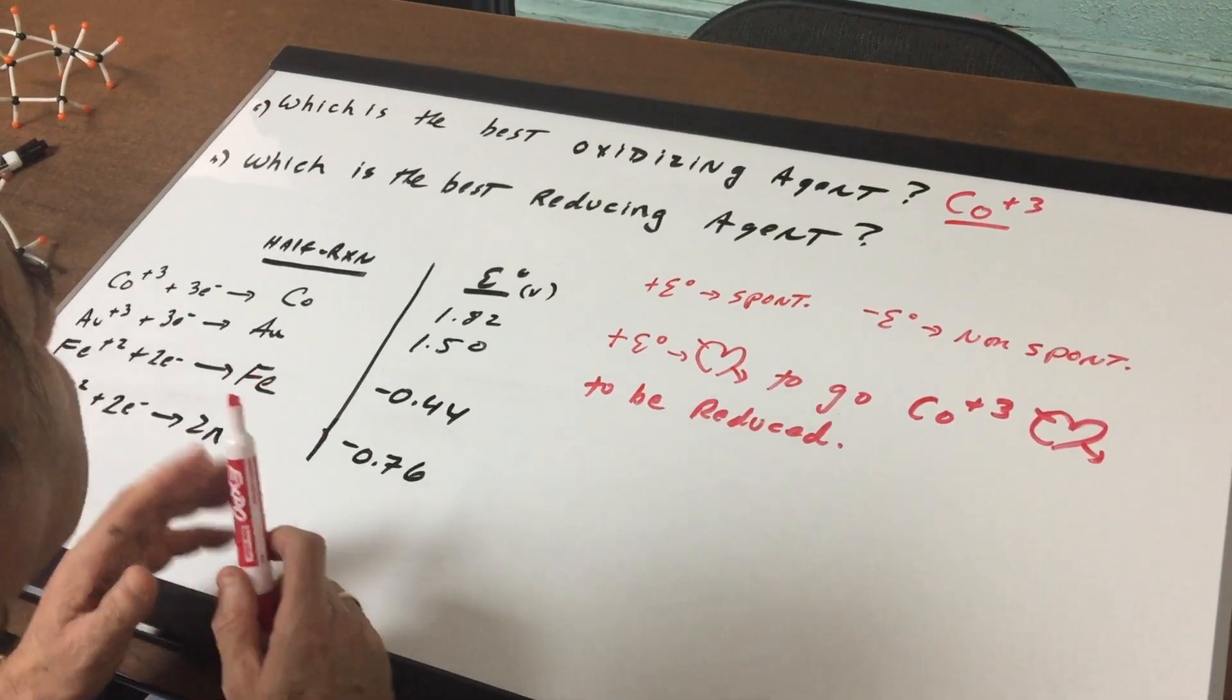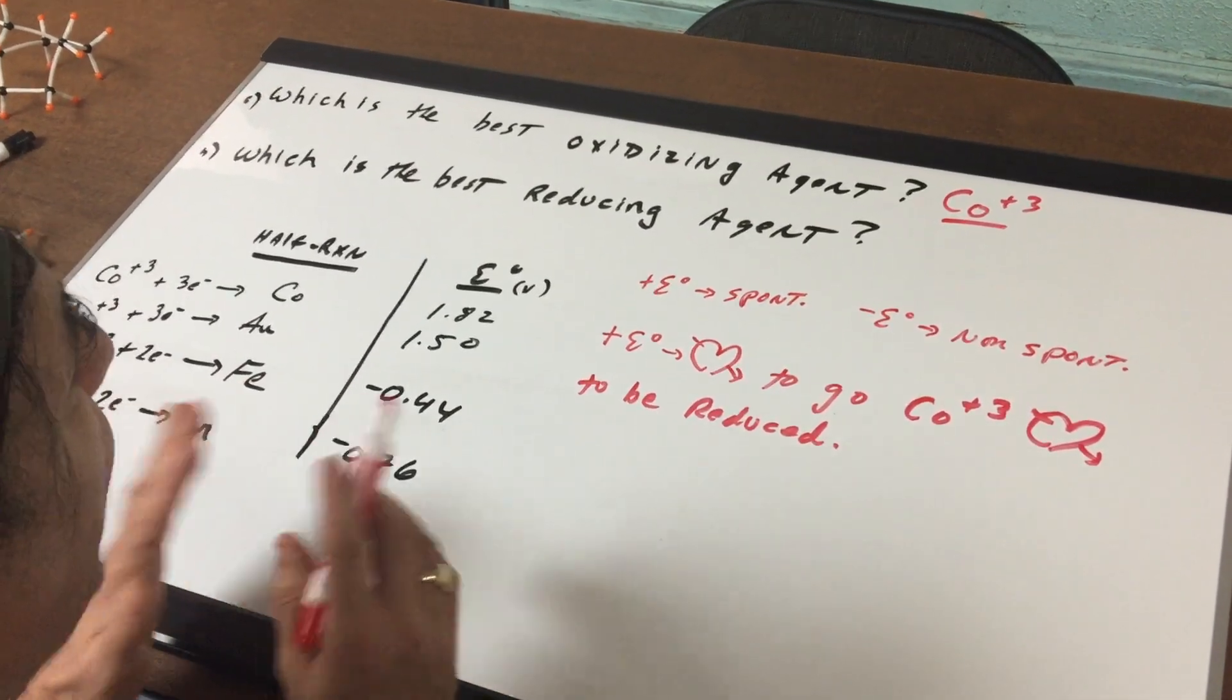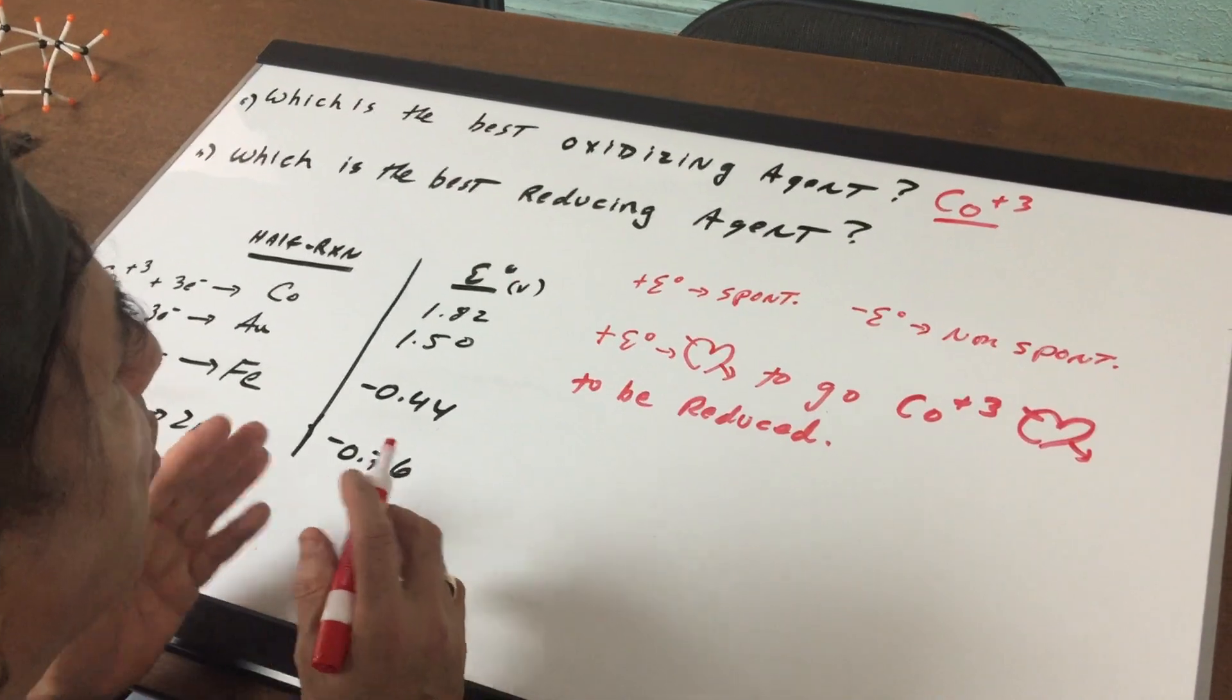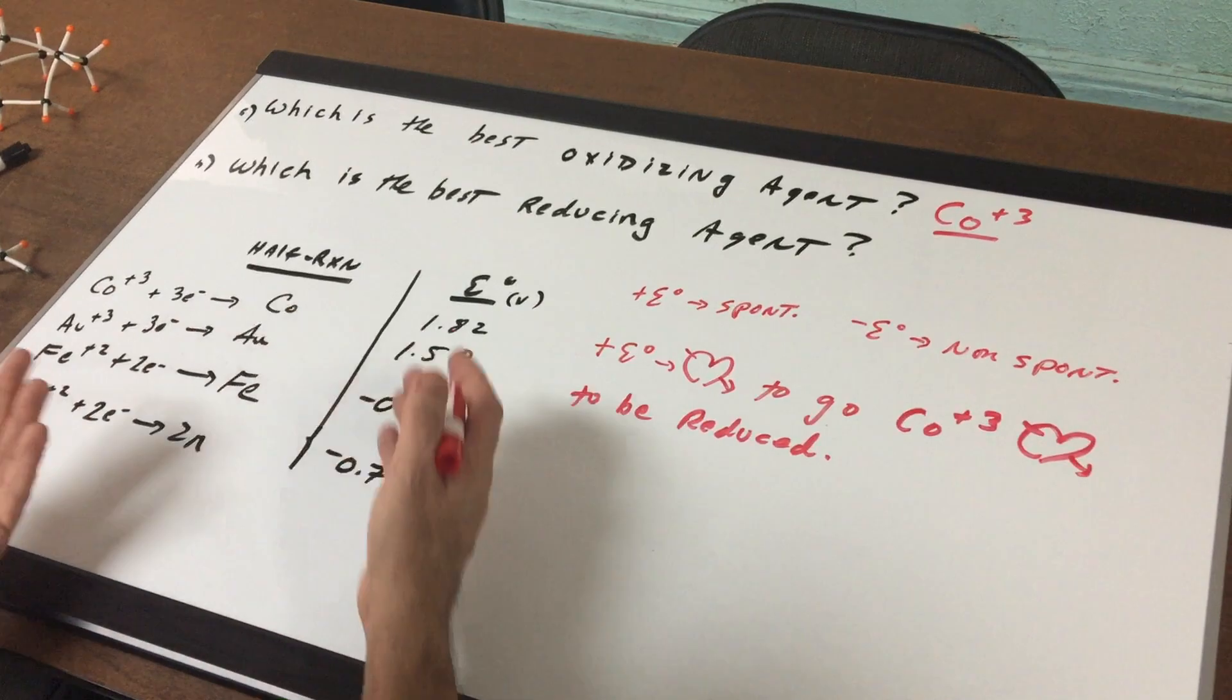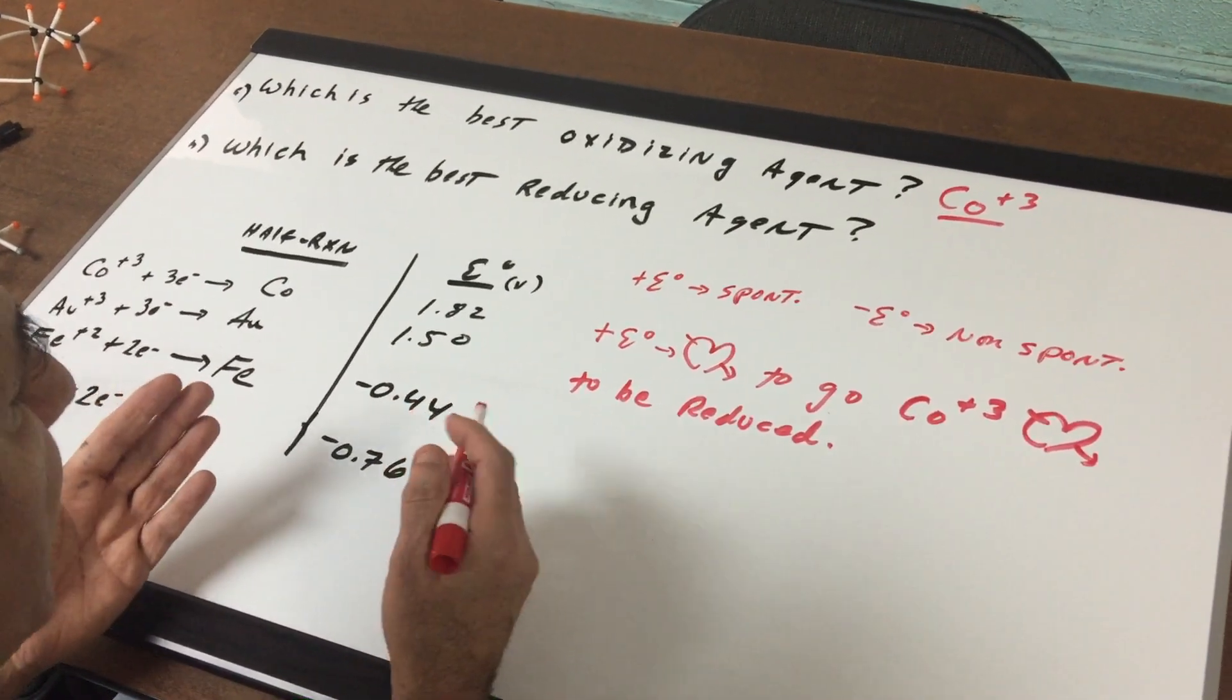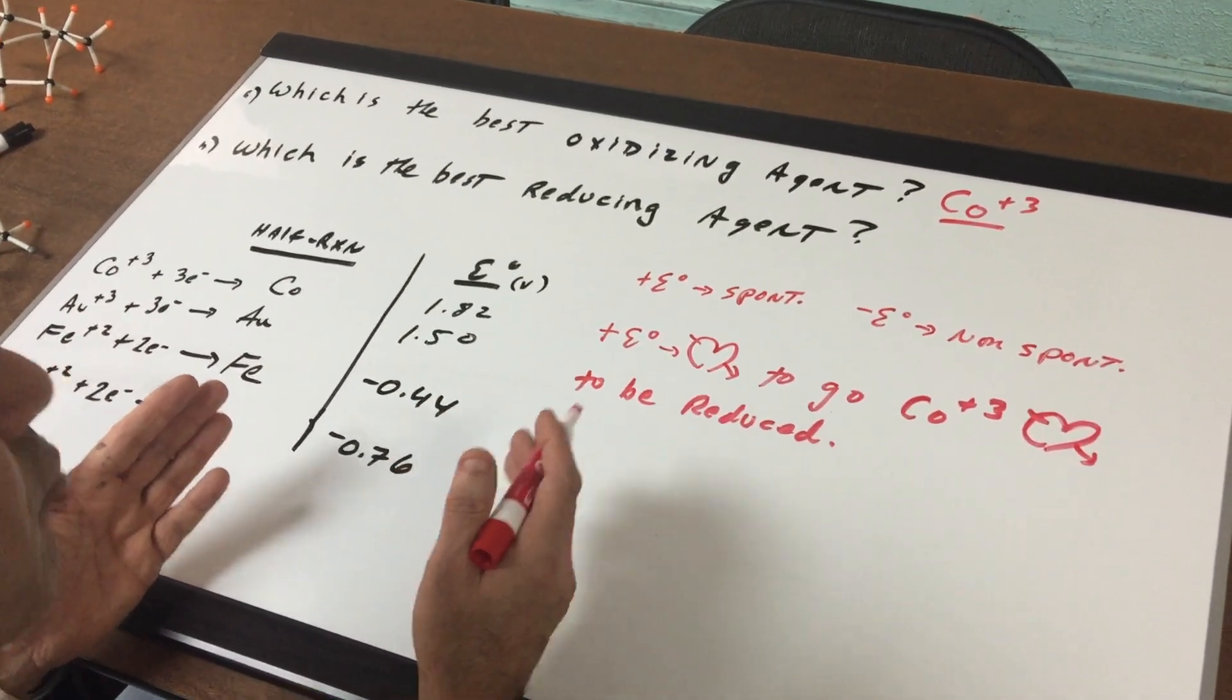Now it gets a little tricky. What's the best reducing agent? That means we're looking for the substance that wants to be oxidized. Well, as you can see, none of these are written in terms of oxidation. So that means that every one of these must be reversed.